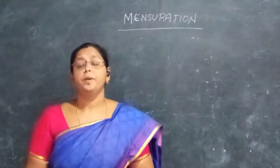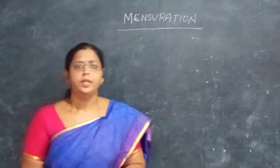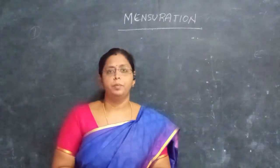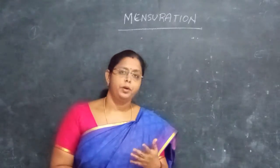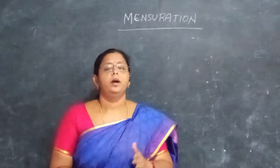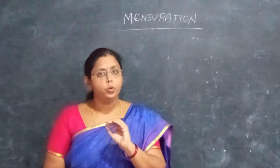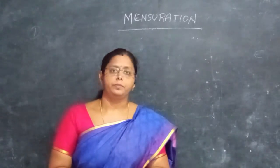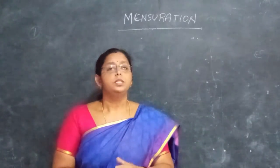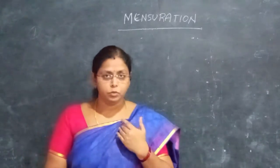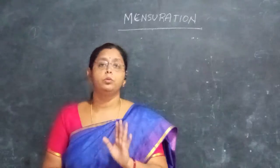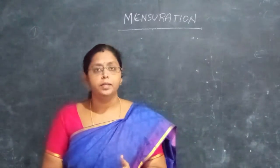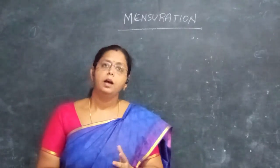So, you know what's going on? You need to know the mensuration formula in school. In general, the mensuration formula is very easy. The mensuration part includes: cube, cylinder, cone, sphere, and hemisphere.